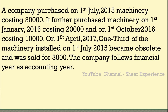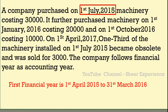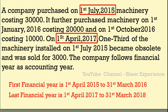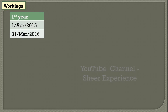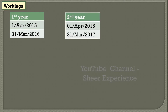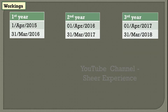The problem doesn't specify how many years to calculate depreciation, so we determine this from the question. The first purchase date is 1st July 2015, so the first financial year is 1st April 2015 to 31st March 2016. The last date given is 1st April 2017, so the last financial year is 1st April 2017 to 31st March 2018. We need to prepare the machinery account for three financial years.